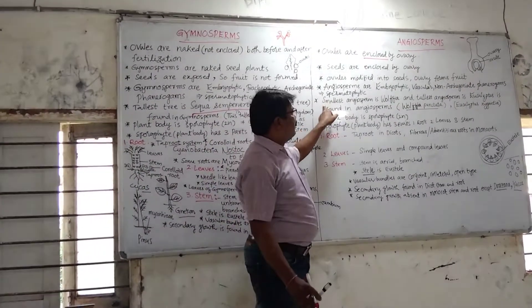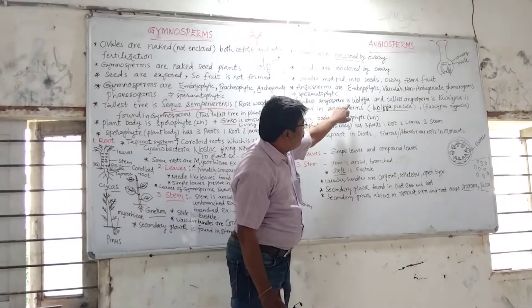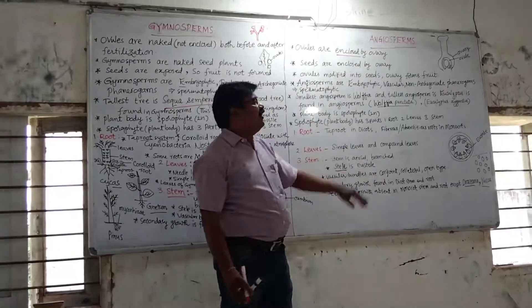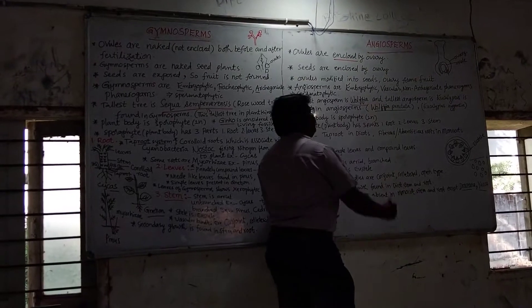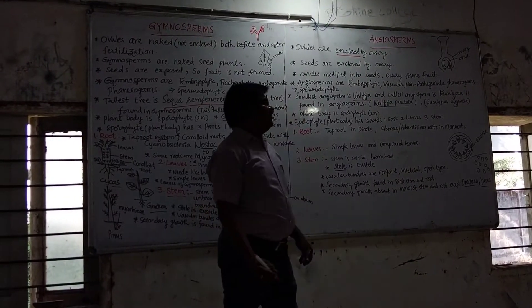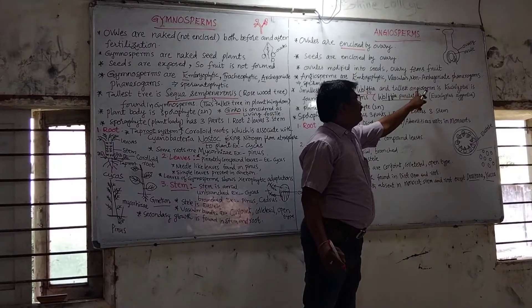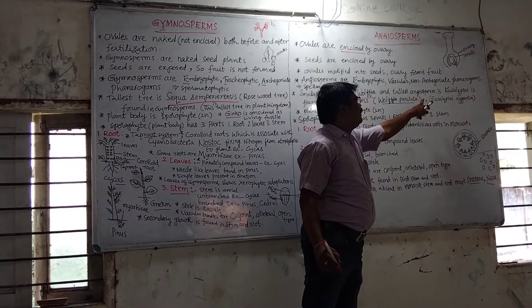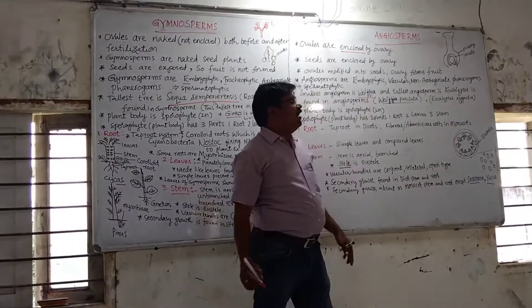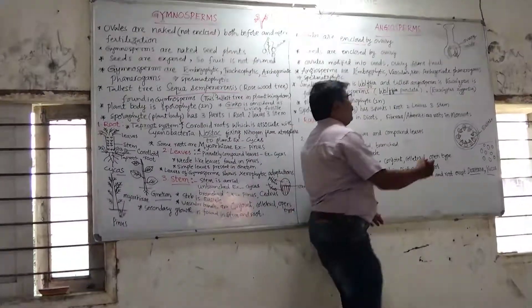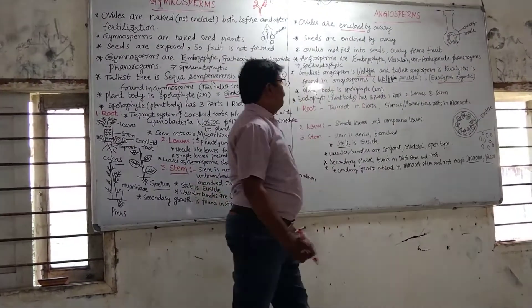In angiosperms, the smallest angiosperm is Wolffia (Ulfia) pancetica, which is a hydrophilic plant. The tallest angiosperm plant is Eucalyptus regnans (Eucalyptus gynosea).